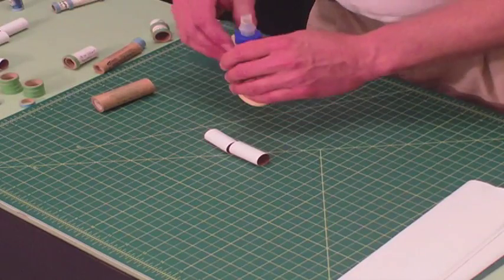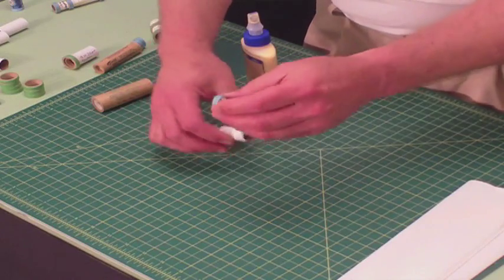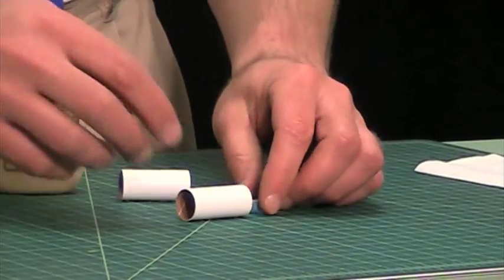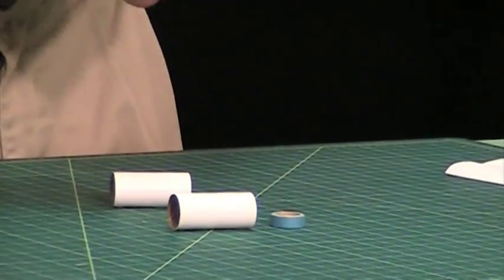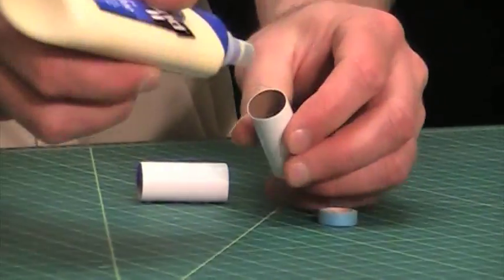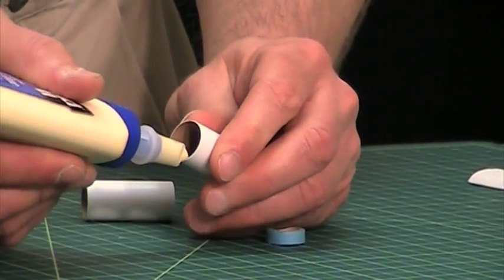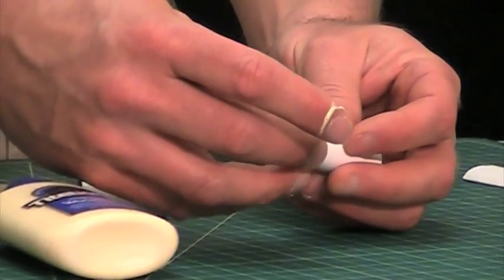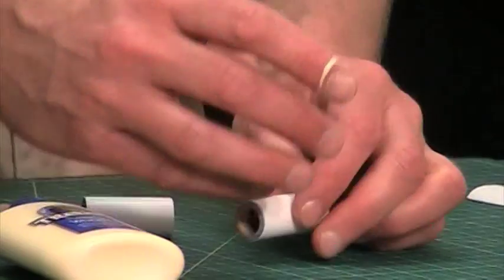We're going to take our glue and glue one centering ring on the back of the tube. This one is going to be flush with the end of the tube, and this is going to be the nozzle end of the tube. I'm just going to take some glue, put it in there, slide it around, stick that in there, and we're going to allow that glue to dry.